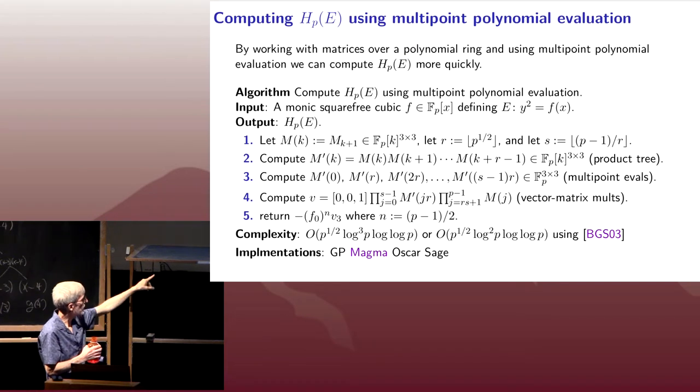the complexity bound that you get, they're all taking advantage of this BGS03 result to save a log factor. And they're using multipoint evaluation to do it.